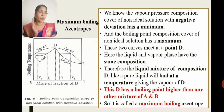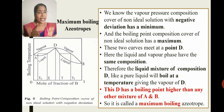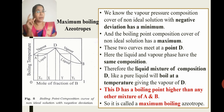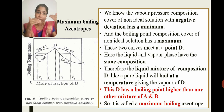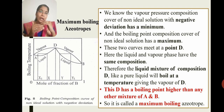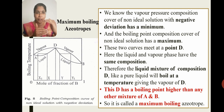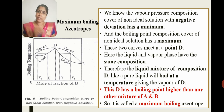This composition D has a boiling point higher than any other mixture of A and B. We call this an azeotropic mixture at point D. Therefore, this is called the maximum boiling azeotrope.